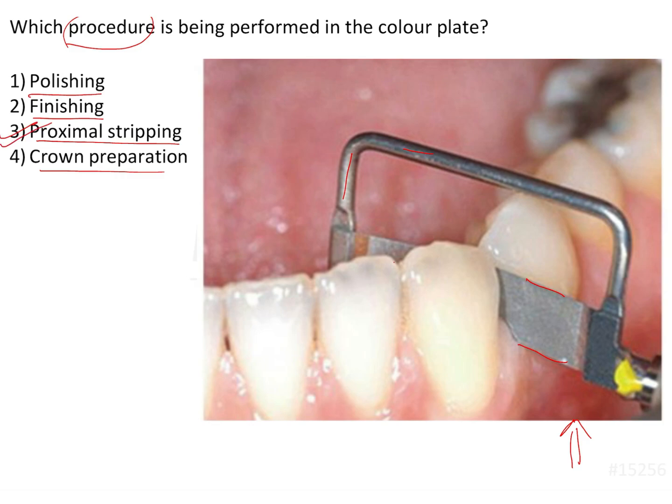Proximal stripping is a procedure that is done in order to reduce the mesiodistal dimension of the teeth. It helps to remove some amount of enamel from the proximal surfaces, that is the mesial or the distal surfaces, in order to gain space in the arch.